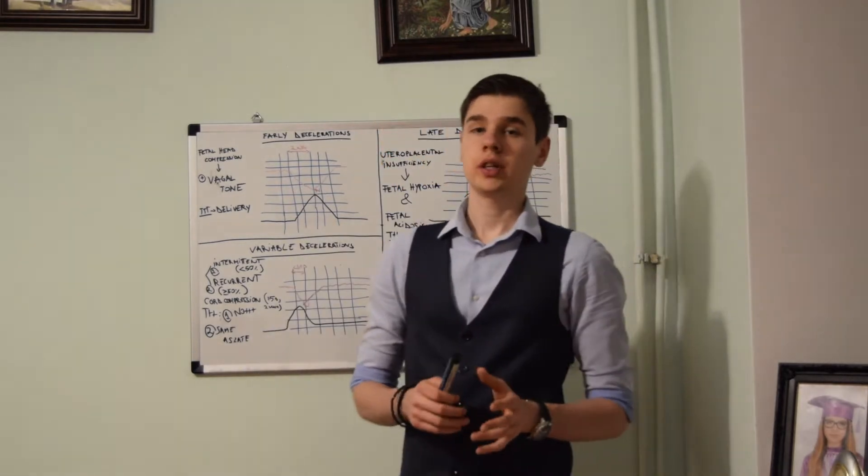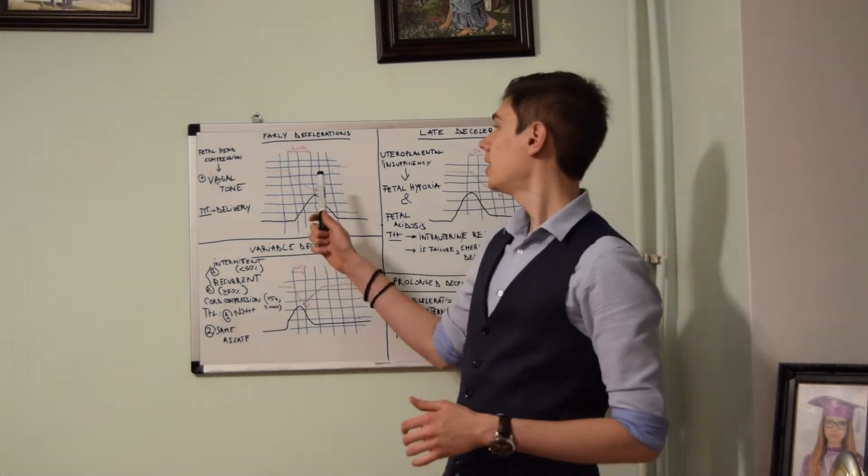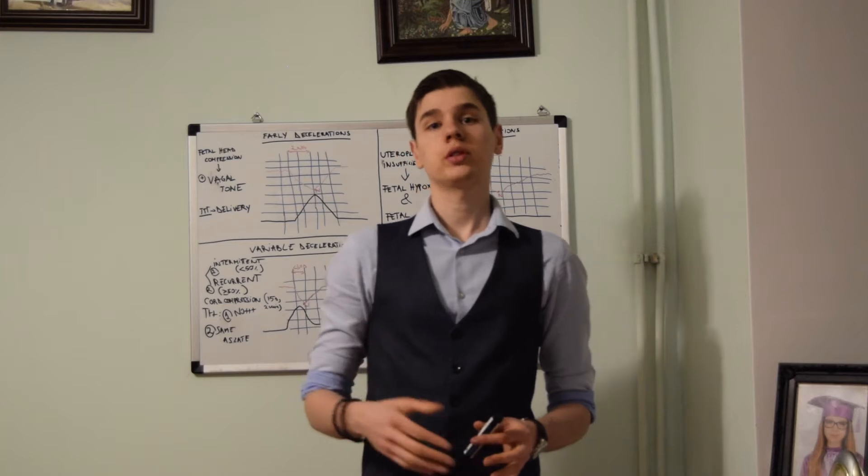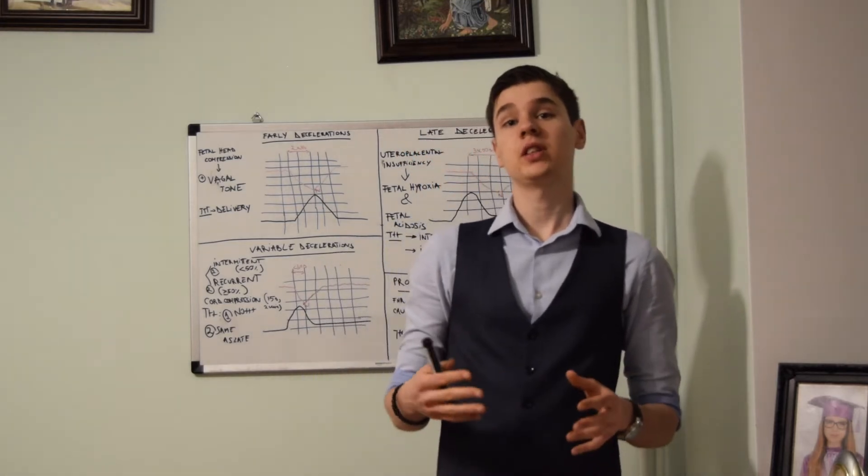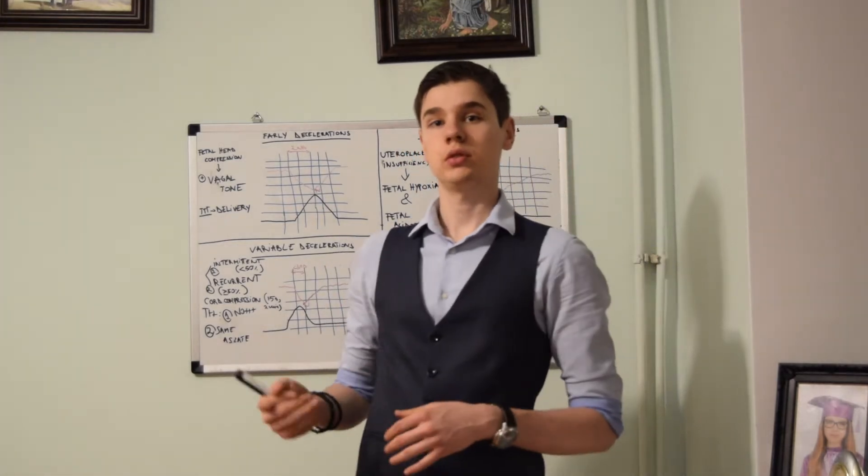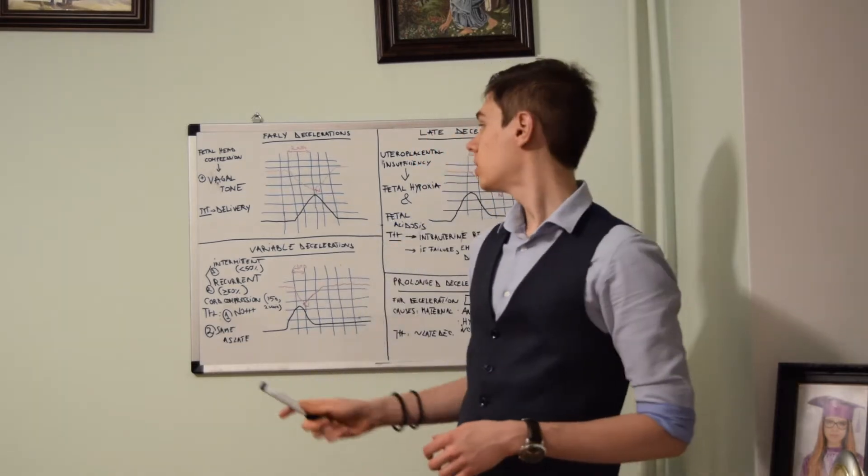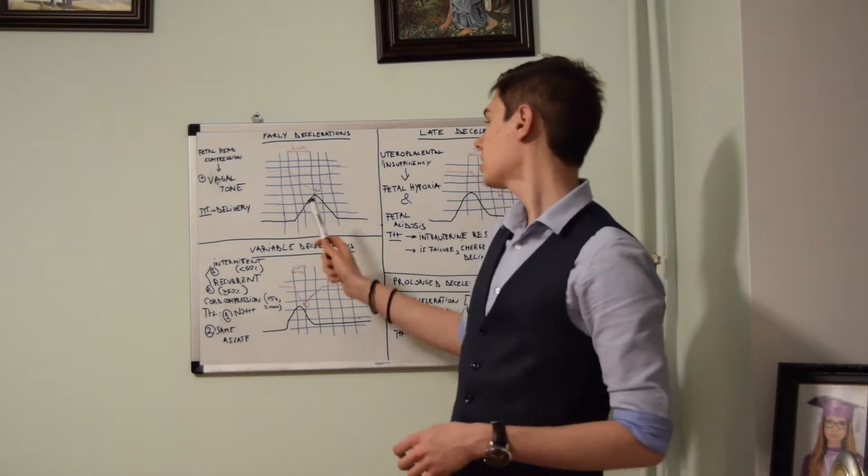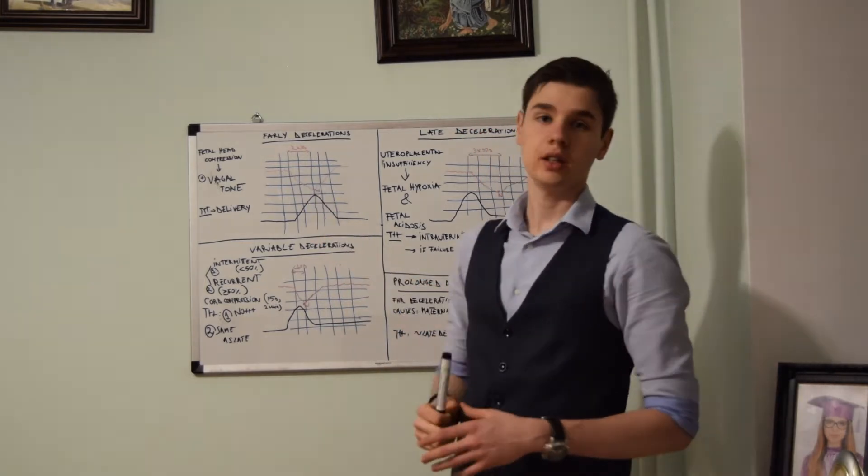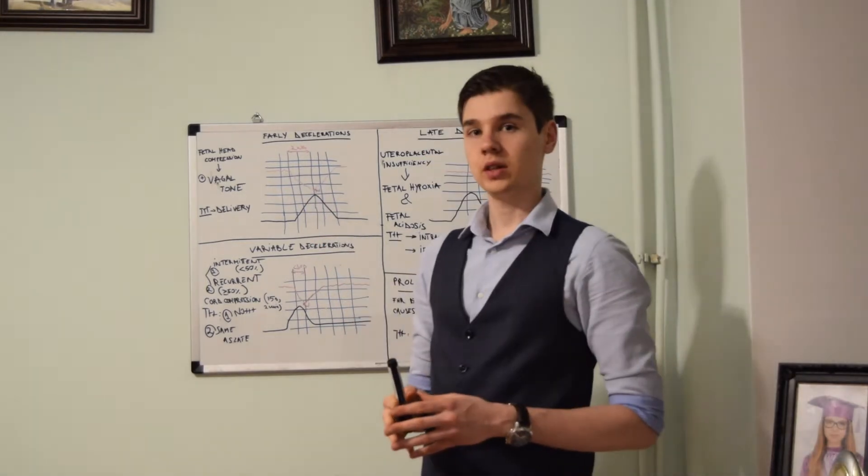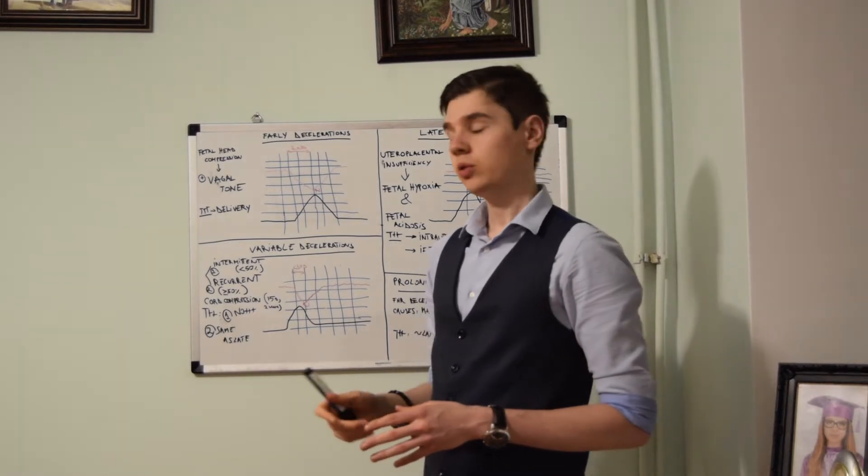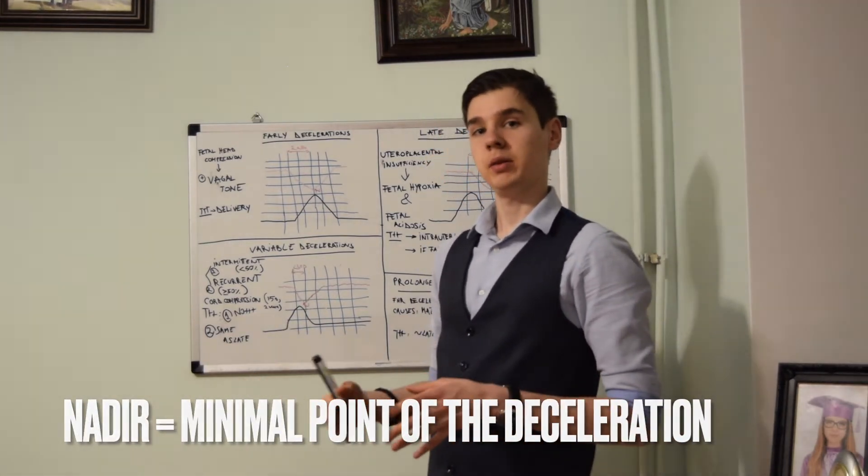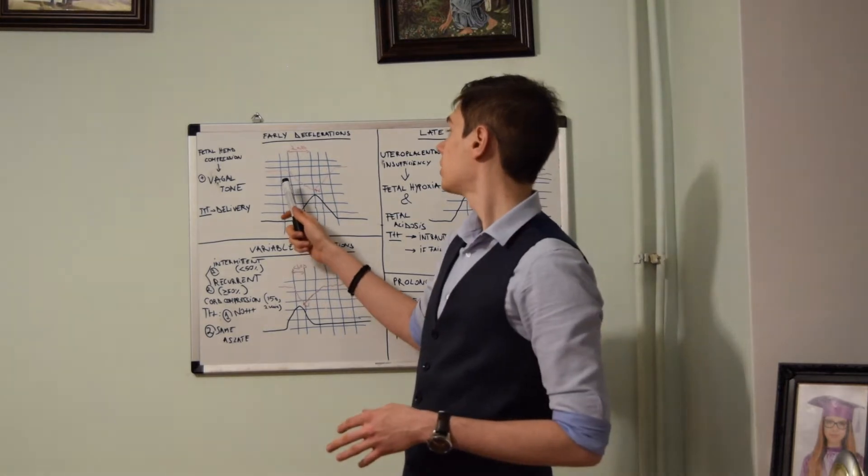The type that we already encountered are early decelerations. Early decelerations are caused by the compression of the fetal head during the uterine contractions. This compression leads to a stimulation of the vagal tone of the fetus and thus decreases the fetal heart rate.